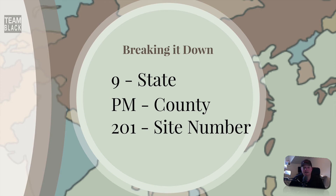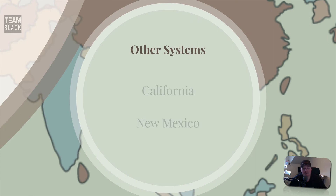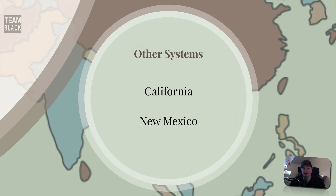You can tell about when a site was recorded if you know any history of the county and the archaeology there. If you had a stack of site records, you could say 201 is older than 2001, because that was a later site number issued. Some other systems: California and New Mexico — the Laboratory of Anthropology at the University of New Mexico has their own system for site numbers. California has their own system as well, with primary numbers and their own trinomial based on the counties within California and the sites recorded there. So very similar to the rest of the systems, but not as universal.